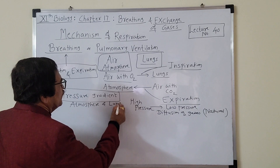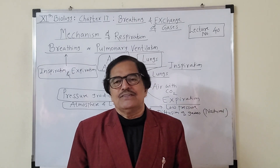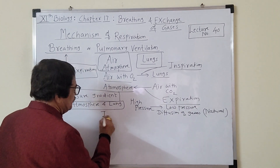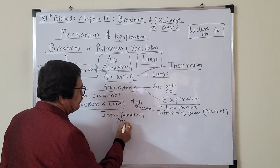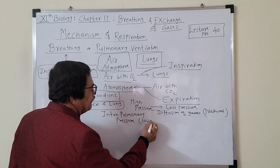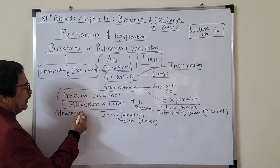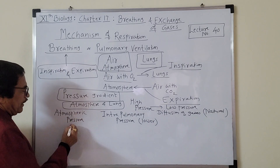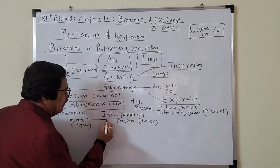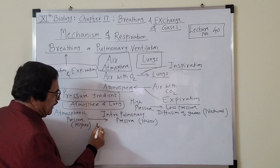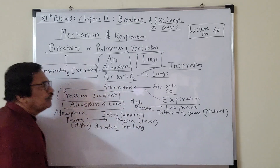The pressure gradient should be formed between the atmosphere and the lungs. Whenever the intrapulmonary pressure — that is, pressure inside the lung — is lower than the outer atmospheric pressure, the air will automatically be drawn into the lungs. Air with O2 will enter the lungs, and the process of inspiration will occur.